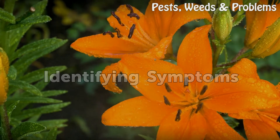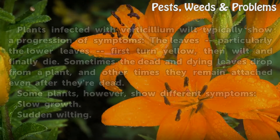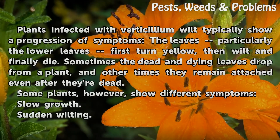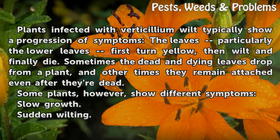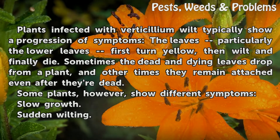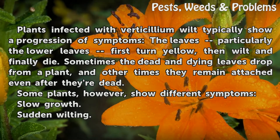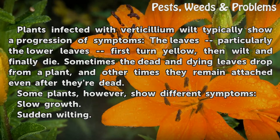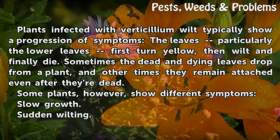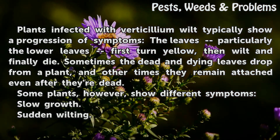Identifying Symptoms. Plants infected with verticillium wilt typically show a progression of symptoms. The leaves, particularly the lower leaves, first turn yellow, then wilt and finally die. Sometimes the dead and dying leaves drop from a plant, and other times they remain attached even after they're dead. Some plants, however, show different symptoms.